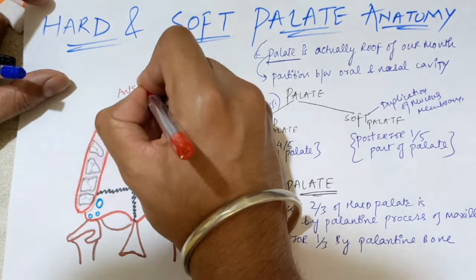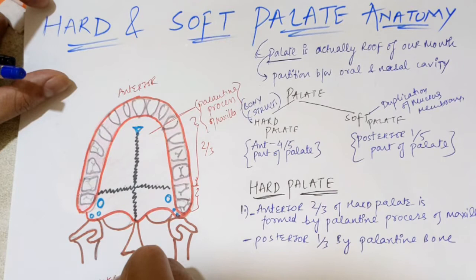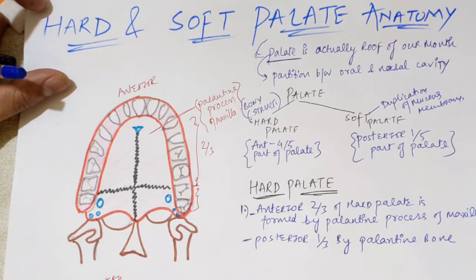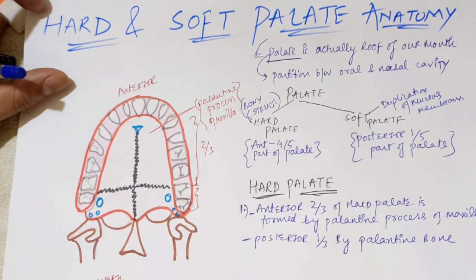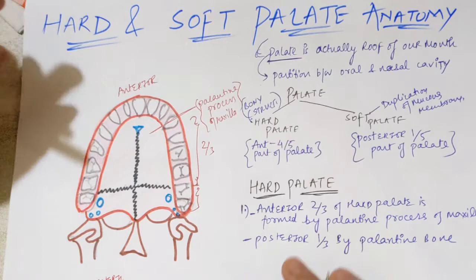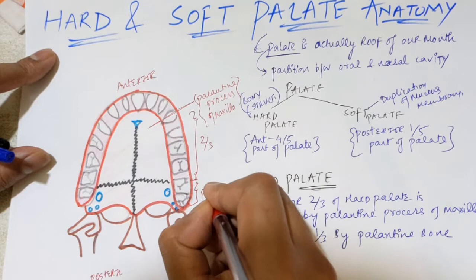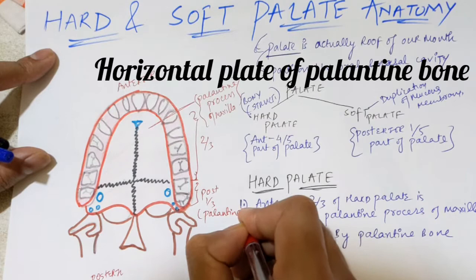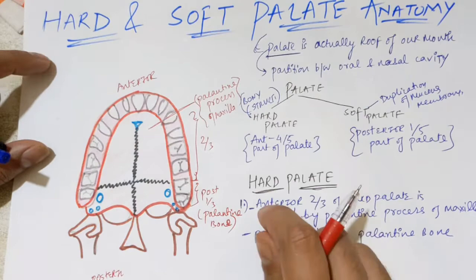The posterior one-third is formed by the palatine bone. The anterior side has incisor teeth, and the posterior side is at the back. The palate is the roof of your mouth — a partition between your nasal cavity and oral cavity, where a layer of bone separates the nose from the oral cavity. The posterior one-third is formed by the plates of the palatine bone.